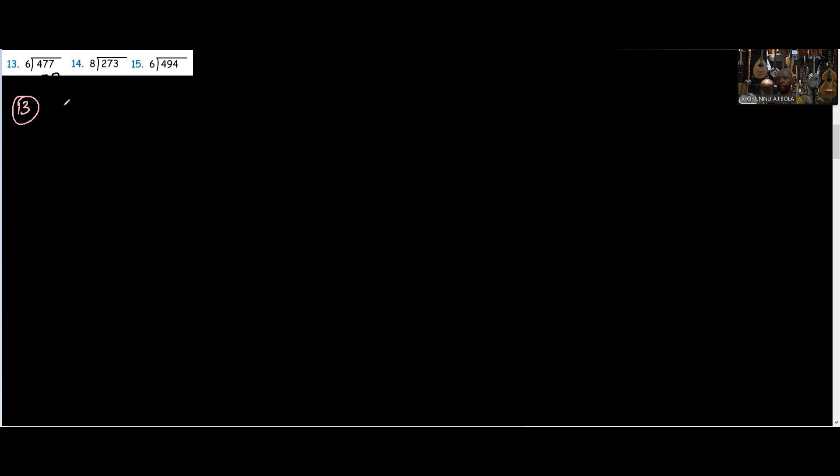For number 13. We have 477. Divide by 6. 6 going 4. 6 to 47 is how many? Let me see... 7 times 6 is 42. Yeah. Then when you subtract you have 5, you bring down this 7... 6 and 57 is 9. 9 times 6 is 54. There you have remainder 3. Okay. Number 14.